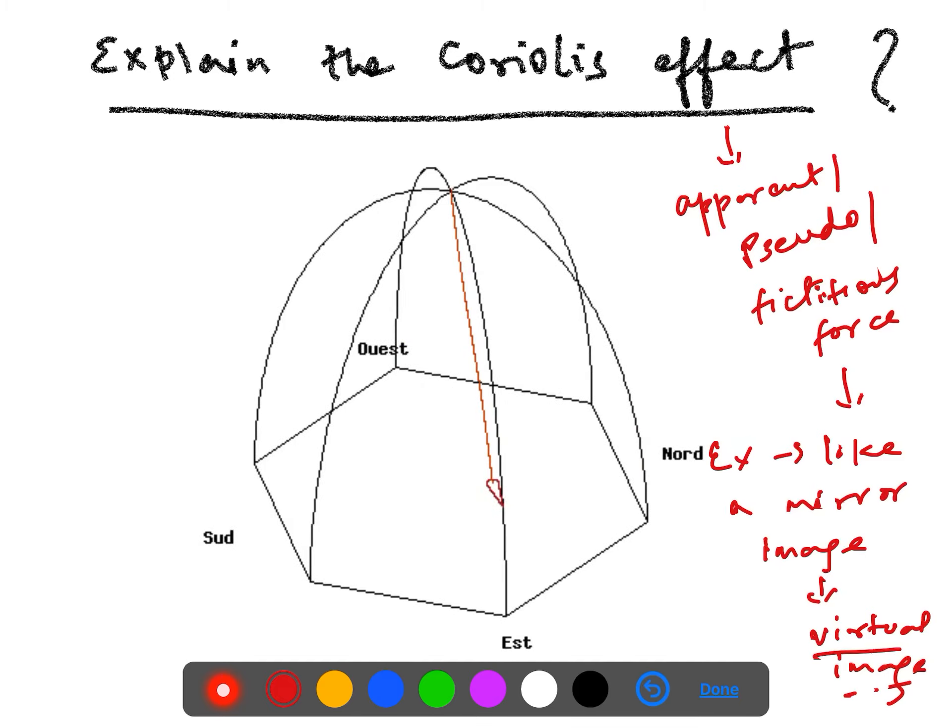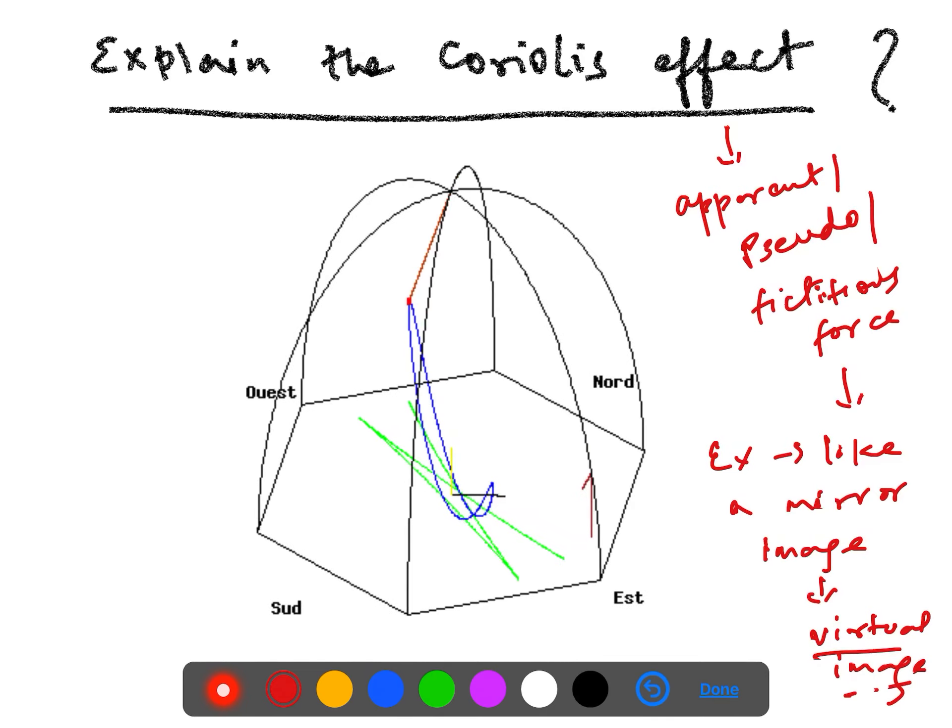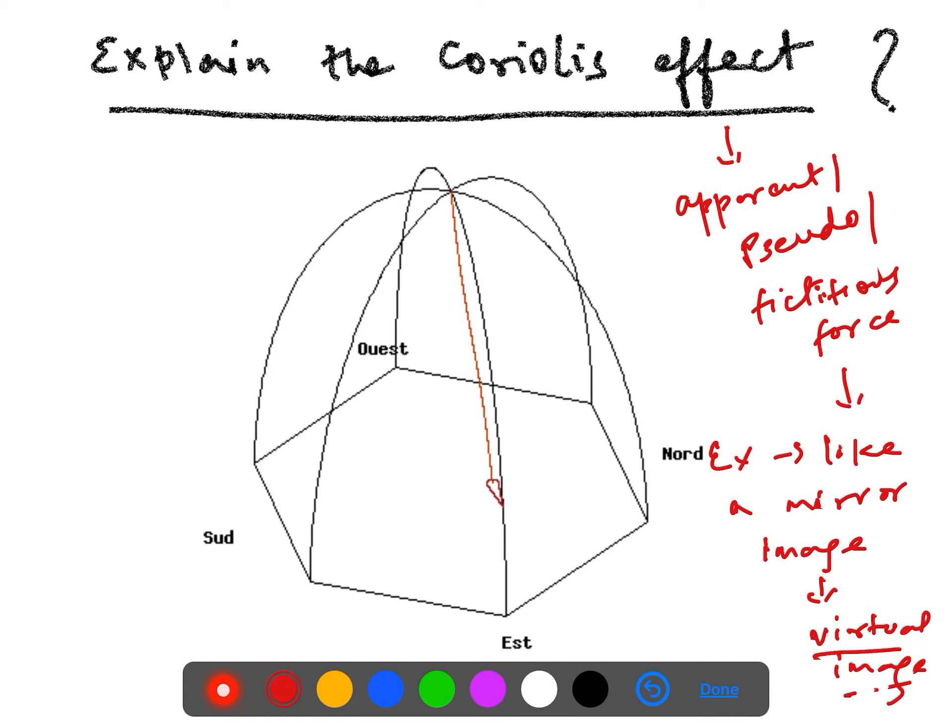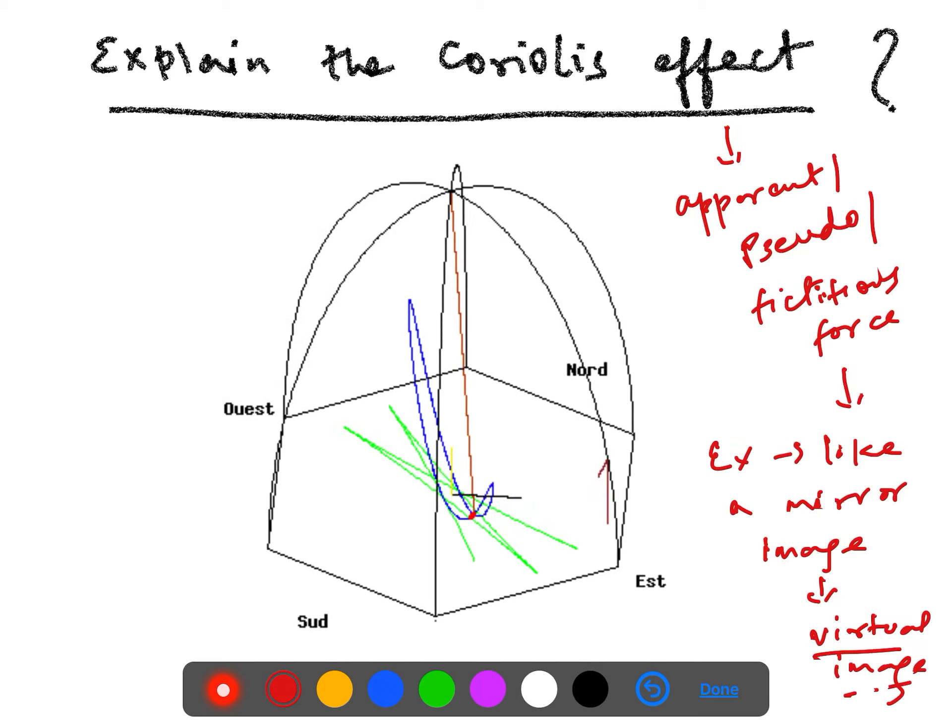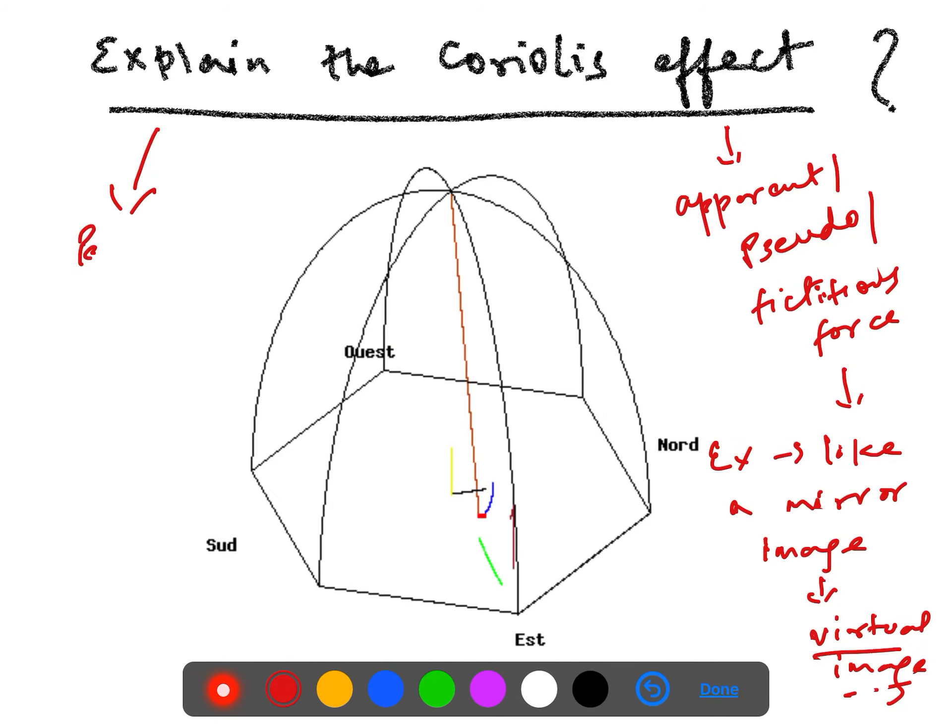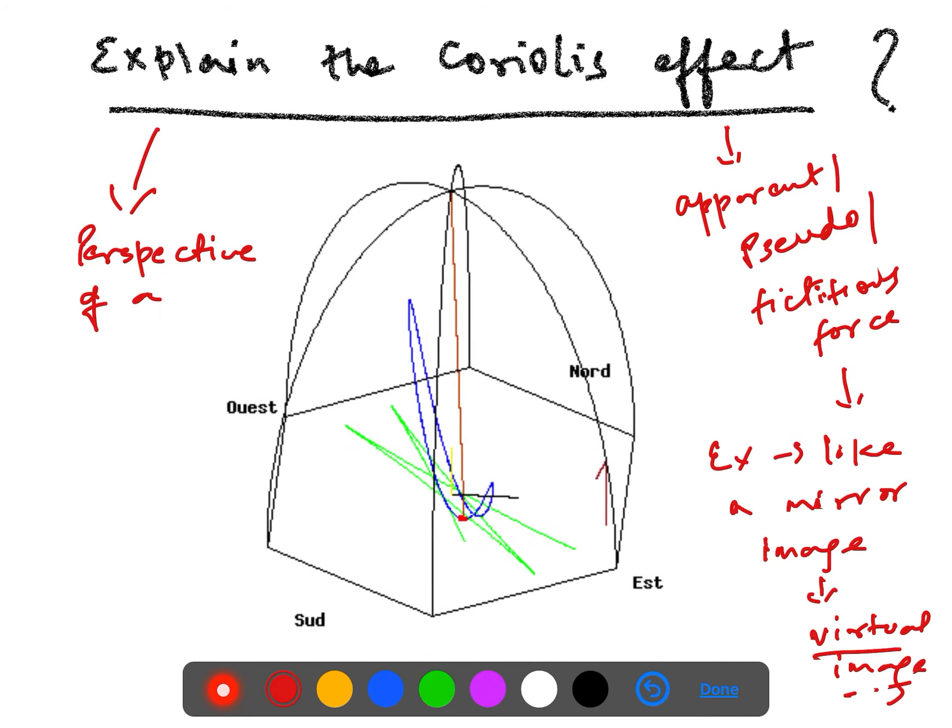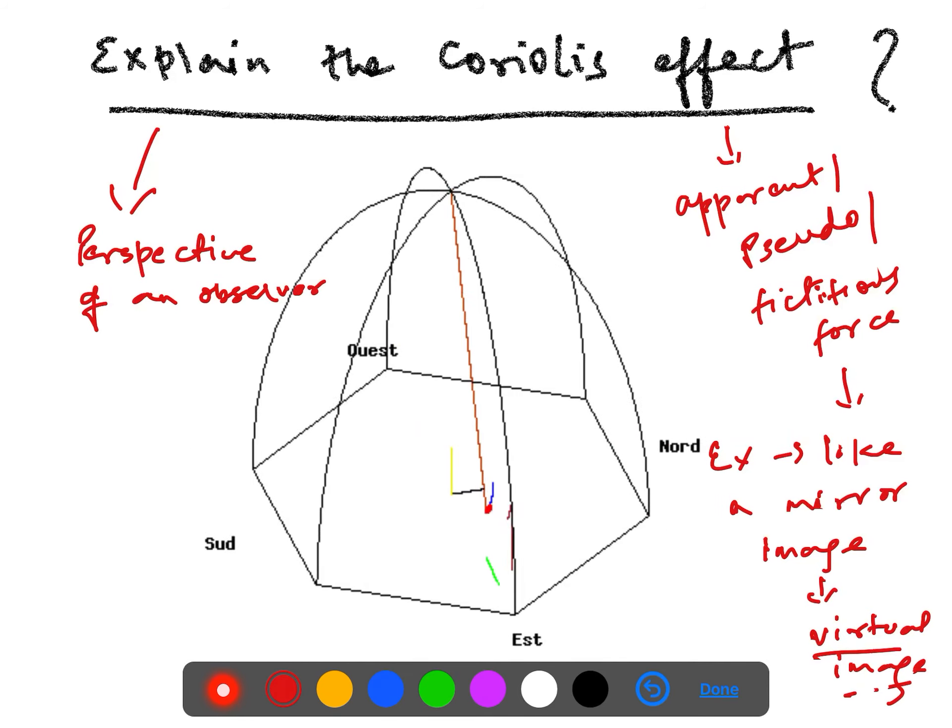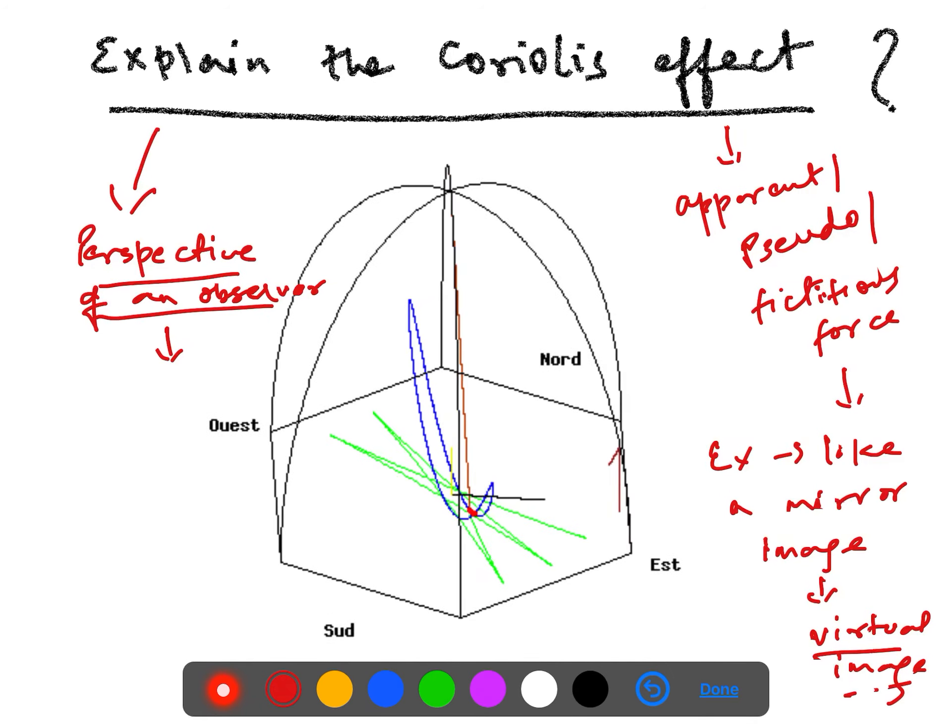The same way, since the earth is spinning, earth is spinning or rotating. An object which is moving in a rotating frame of reference for an observer on the earth, it appears to be deflected. Technically Coriolis force is a perspective, it is a perspective of an observer, observer on the earth system. It's just the perspective change. If the observer himself changes, then the direction might be different.